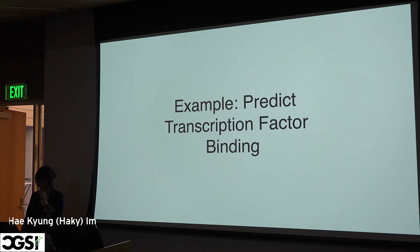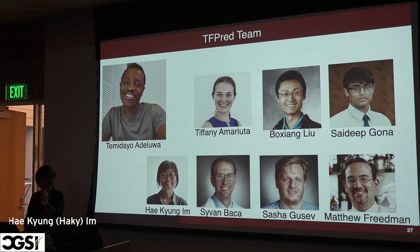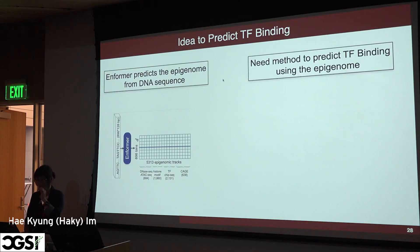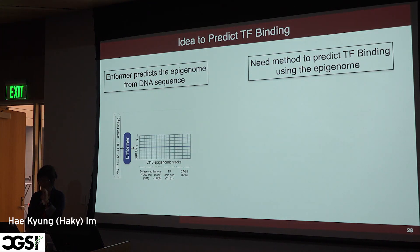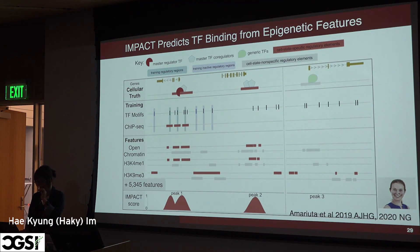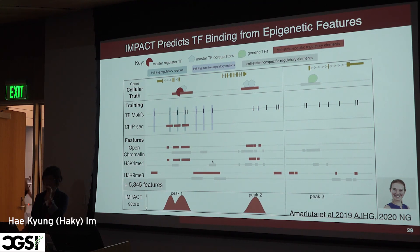Let me show you one example where we're applying this to transcription factor binding. The work is being done by Temi, a rising third-year graduate student, with a large support team. The idea: Enformer predicts the epigenome from DNA sequence. We need a method to take the epigenome to transcription factor binding. One of our collaborators, Tiffany Amaruta, had developed a method called IMPACT that takes epigenetic features and predicts transcription factor binding. We're using her ideas to implement our method called TF-PRED — essentially a combination of Enformer plus IMPACT.